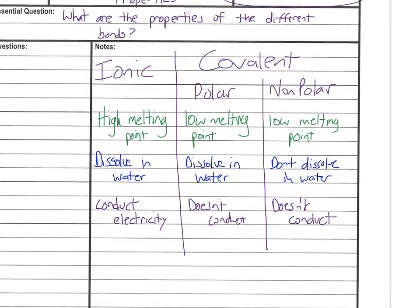The one property we didn't pay as much attention to was the state that compounds are in. Ionic compounds are crystalline — they form a crystal pattern, like the rocks you've seen or salt, which is an ionic compound. Covalent compounds don't have a crystalline structure and can be in any state — not just solids. You do not find ionic compounds as a liquid or a gas, but you do find covalent compounds as a liquid or a gas.